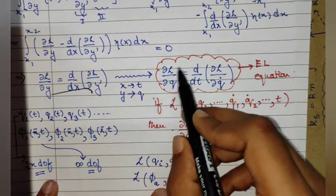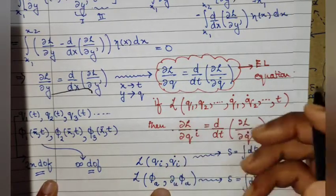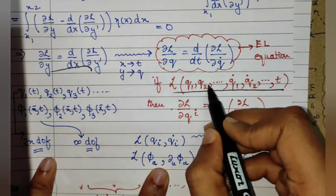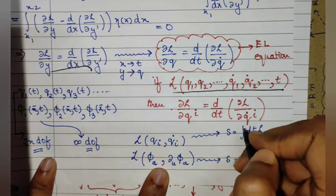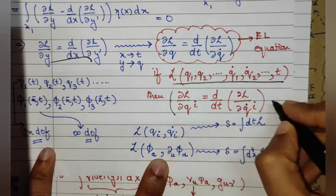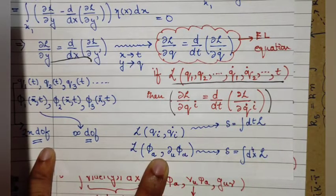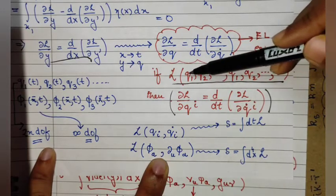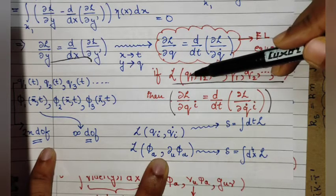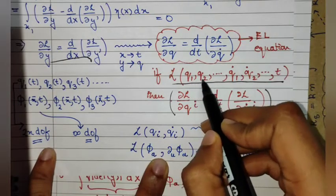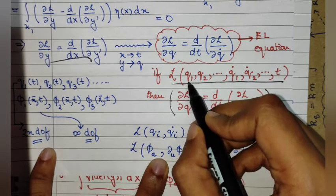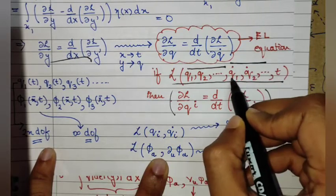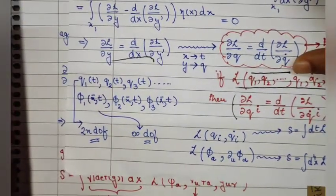The Euler-Lagrange equation applies for a particular coordinate q. If the Lagrangian depends on several coordinates, its full dependence is on q1(t), q2(t), etc., and we obtain an Euler-Lagrange equation for each coordinate q_i. An important point: if you have n coordinates, you have 2n degrees of freedom. The space where the Lagrangian lives is called configuration space, and it has dimension 2n — n from the coordinates q and another n from their time derivatives, q-dot.